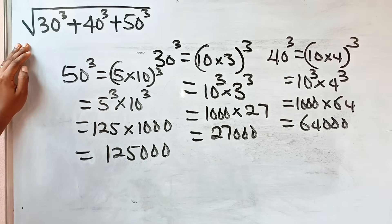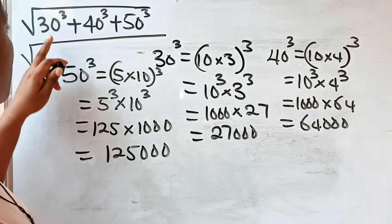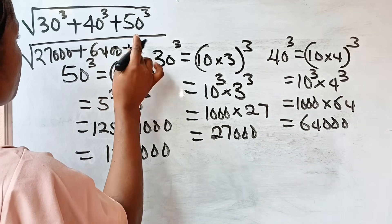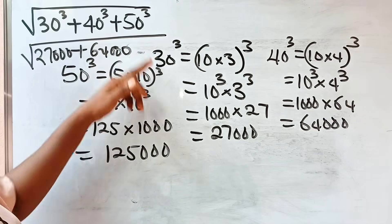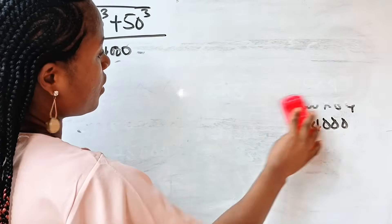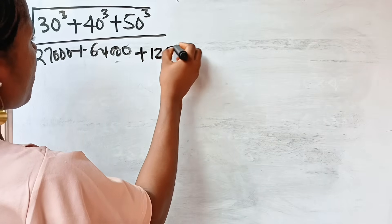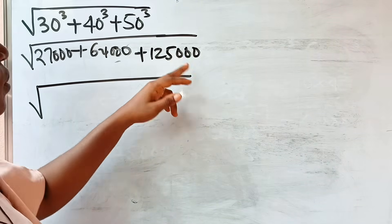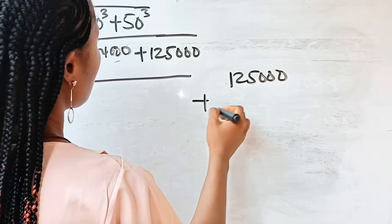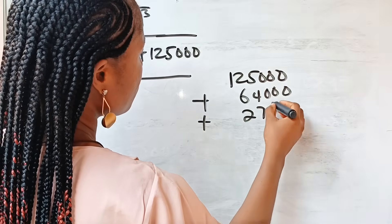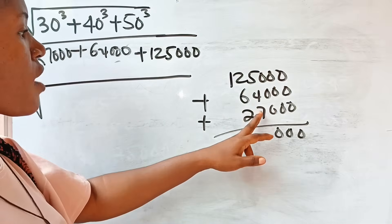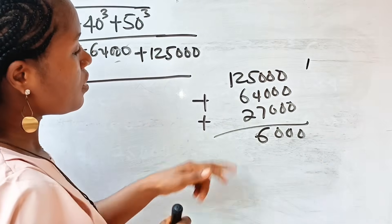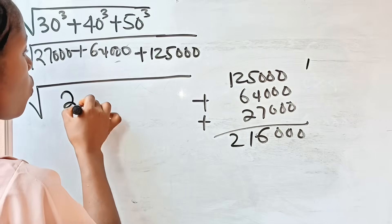So we substitute these values: we have the square root of 27,000 plus 64,000 plus 125,000. We have three zeros throughout. Now 7 plus 4 plus 5 is 16, carry 1. 6 plus 4 plus 2 plus 1 is 11, carry 1. So we have 216,000.